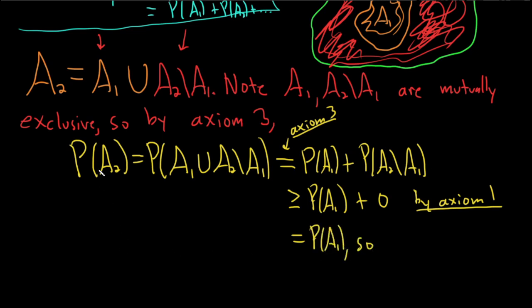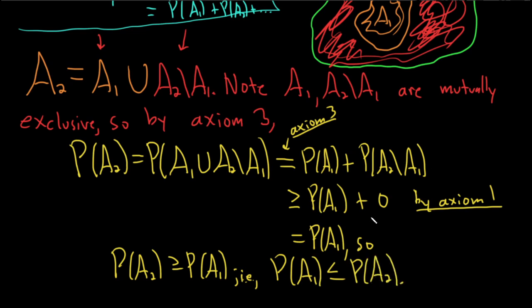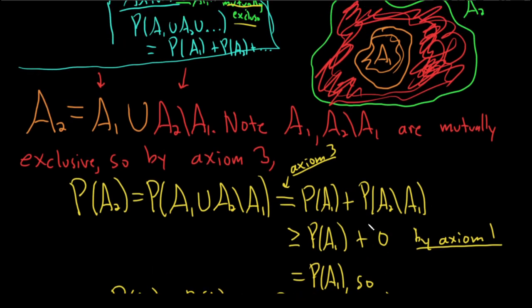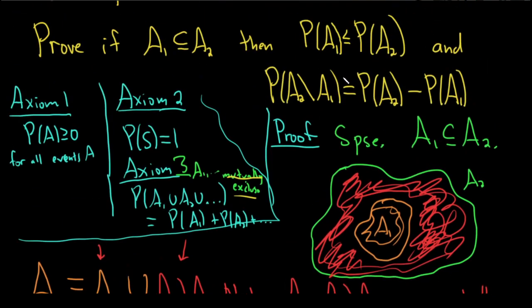Now this is equal to P of A1. So we have P of A2 is greater than or equal to P of A1. It's the same thing. So as we read it backwards, P of A1 less than or equal to P of A2. And that's the first thing we had to show.